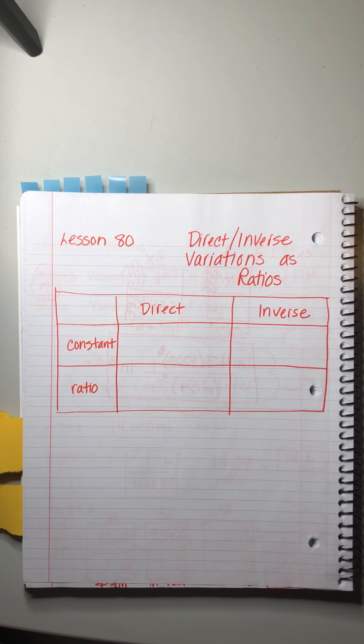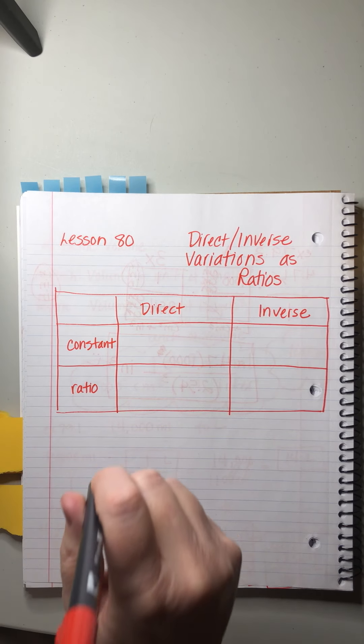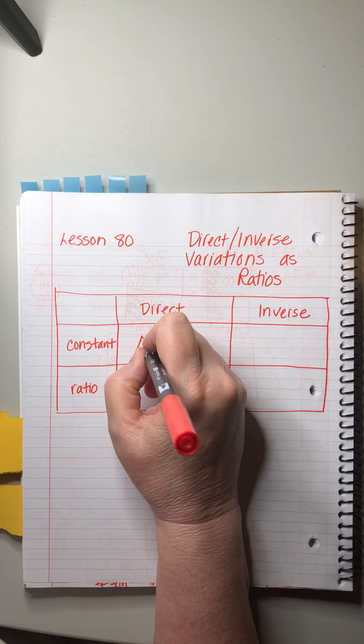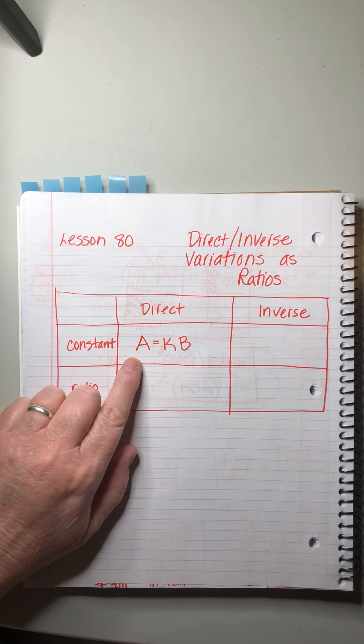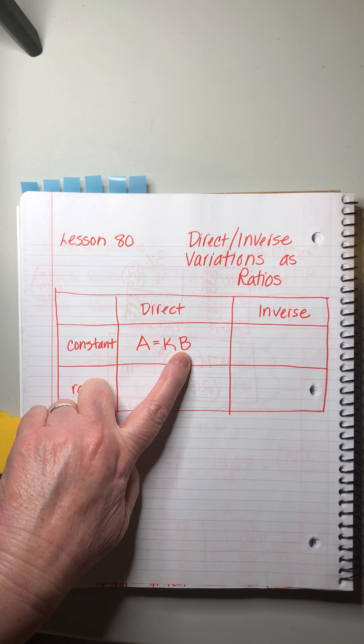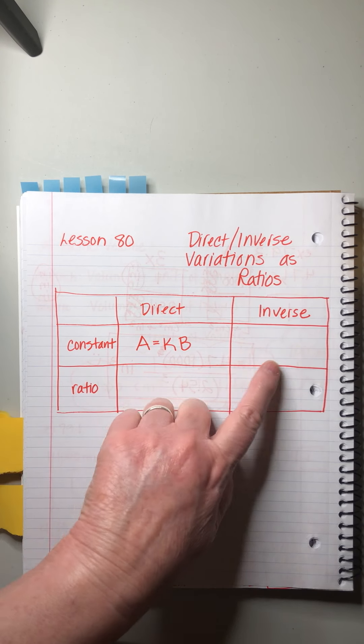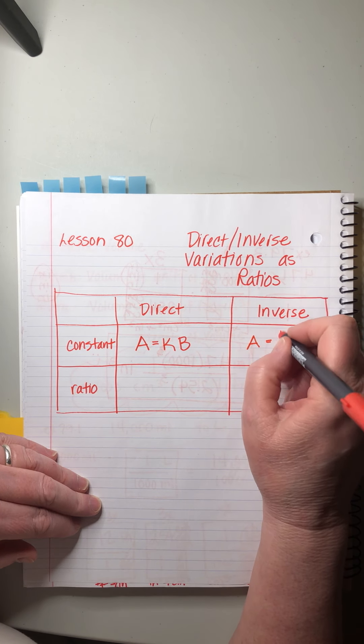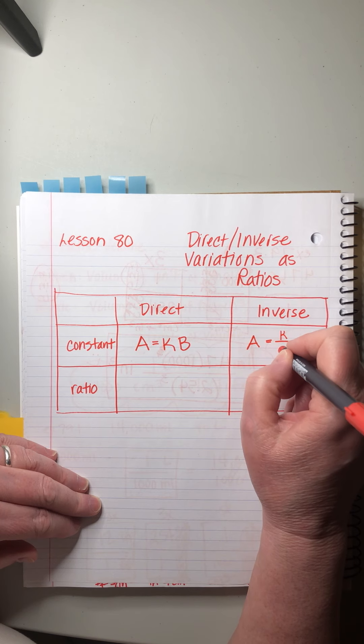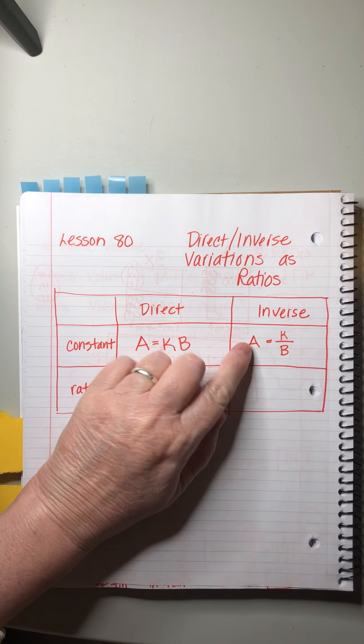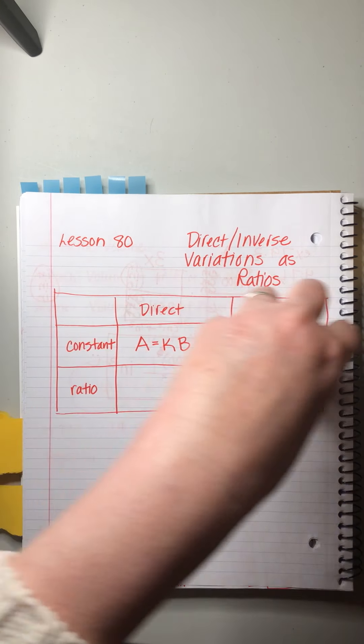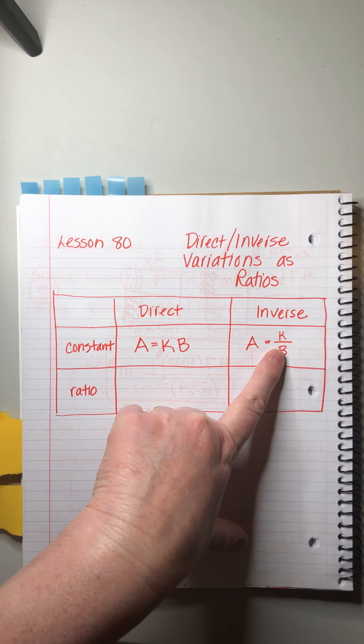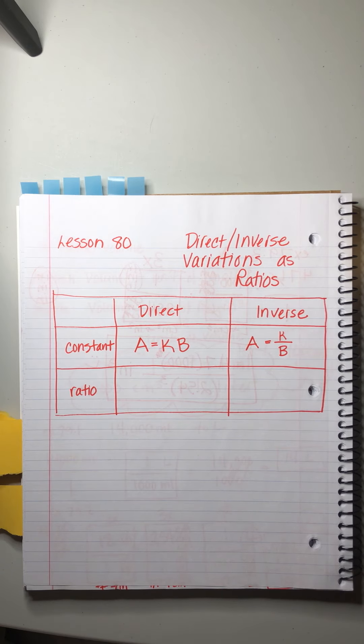When we first started talking about direct and inverse variations, I gave you a ratio that looked like this. We said the amount of A varies directly with the amount of B. And we would change the story, right? The amount of toys on the floor varies directly with the number of toddlers in the room. And then inverse, we would say the amount of candy left in the bowl is inversely related to the number of dads who are helping themselves to refreshments. So we have direct variations and inverse variations, and we had this constant called K. What we would do is we would get enough information so that we do the first step of solving for K, and then we would use K in the second step to answer a question. So those were two-step problems.